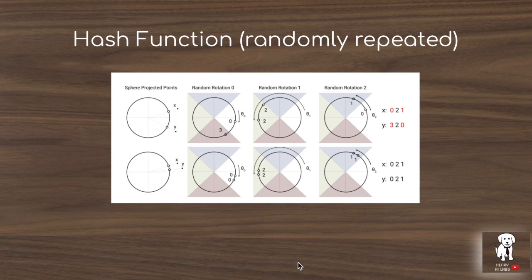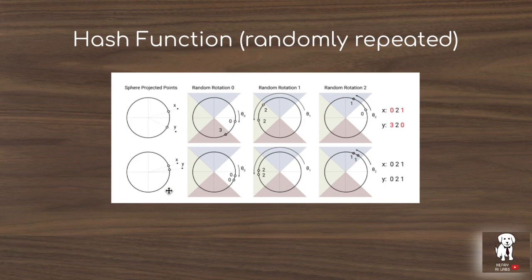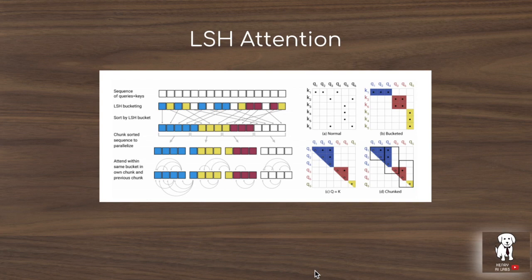The LSH algorithm uses different hash functions randomly and repeats this to get a better estimate of similarity. The paper shows a diagram of rotating vectors and showing how this results in different bucket assignments — vectors nearby end up in similar buckets, while vectors farther apart end up in different ones. For example, in one rotation a vector lands in bucket 0 and another in bucket 3 (not similar), but in another rotation both land in bucket 2 (similar). This demonstrates that nearby vectors yield similar bucket placements with the hash functions.